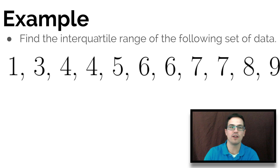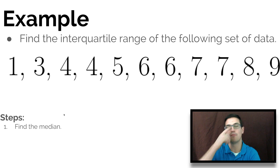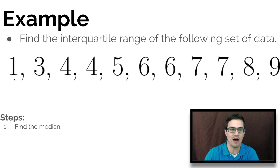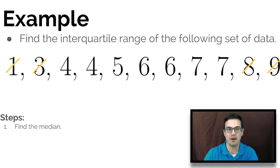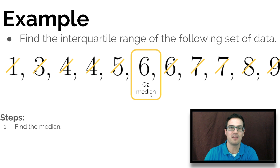The first thing you're going to want to do to find the IQR, or interquartile range, is find the median. Remember that is the middle number, so I'm going to cancel out the outside numbers each time until we get to the middle. The 1 and 9 are gone, then the 3 and 8, the 4 and 7, the other 4 and 7, the 5 and 6, and we're left with 6, which is our Q2 or second quartile — the median.